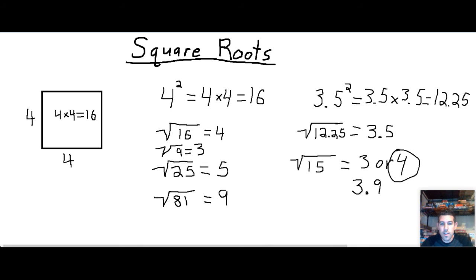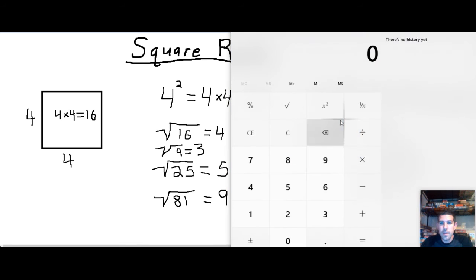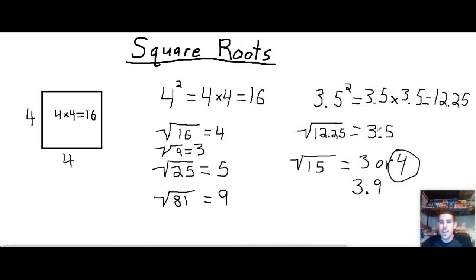And we can even take our calculator and see how close we got. 3.9 times 3.9. Hey, it's 15.2, so we're pretty close. The square root of 15 is about 3.9. And that would be our answer. So we can say the square root of 15 is about 3.9.